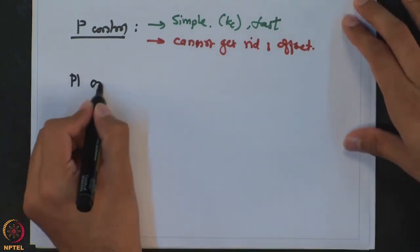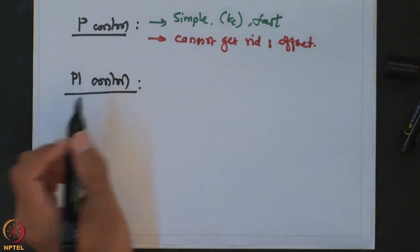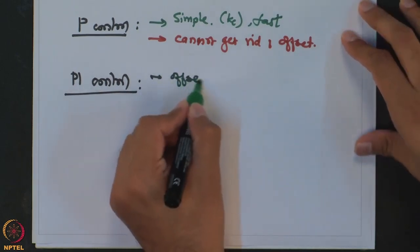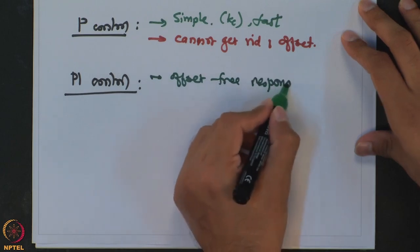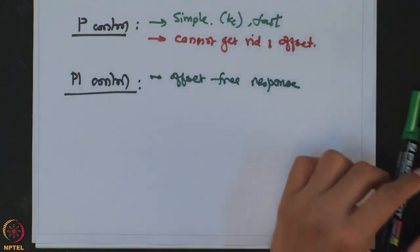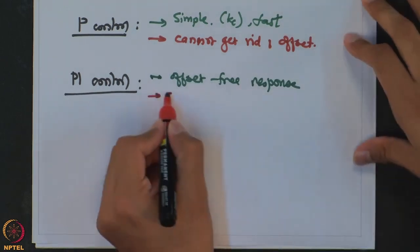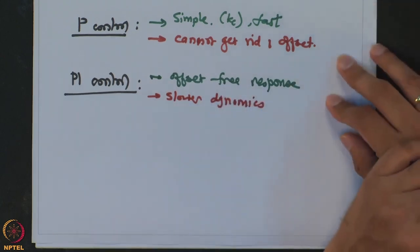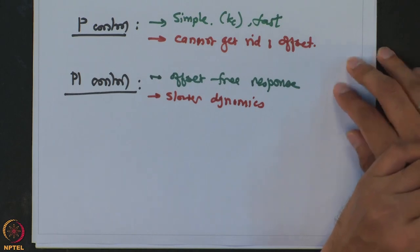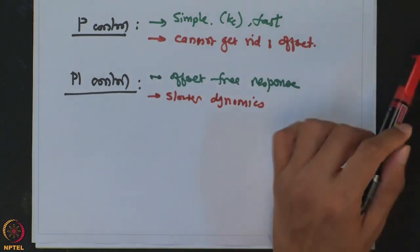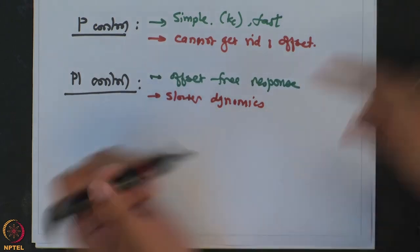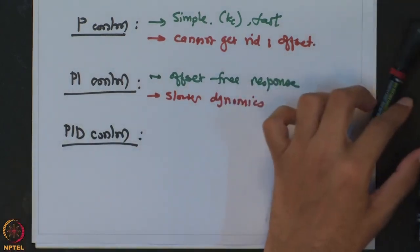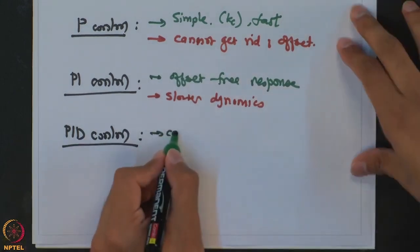Then we go to proportional-integral control. The advantage of a PI controller is that you get an offset-free response, but this comes at the cost of sluggish or slower dynamics. We have seen that a PI controller increases the order of the system, so the response of the system becomes slower or sluggish. And then lastly, we have looked at the full-blown PID controller — proportional-integral-derivative control — whose advantage is that it can improve speed of response.